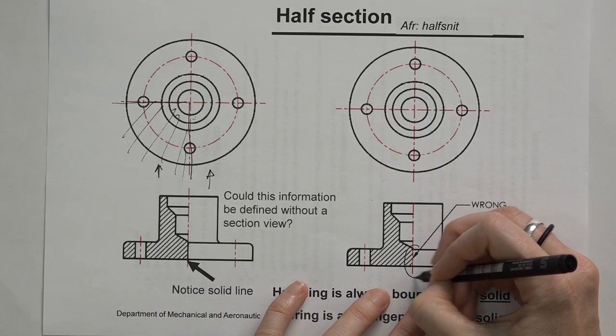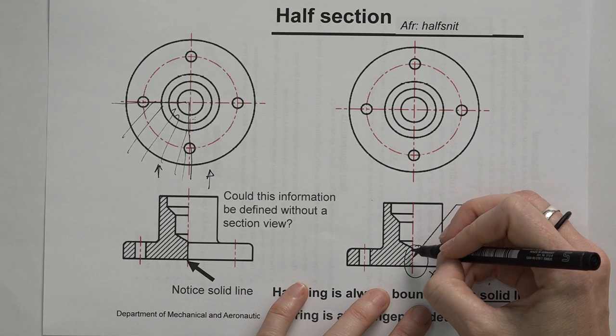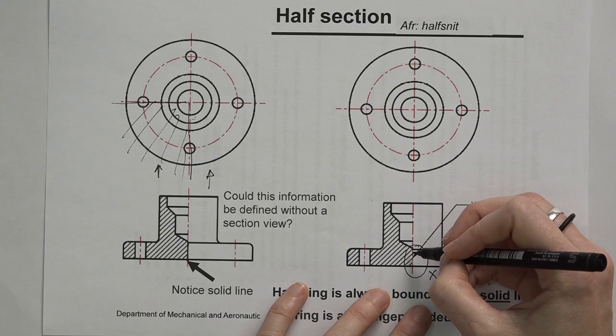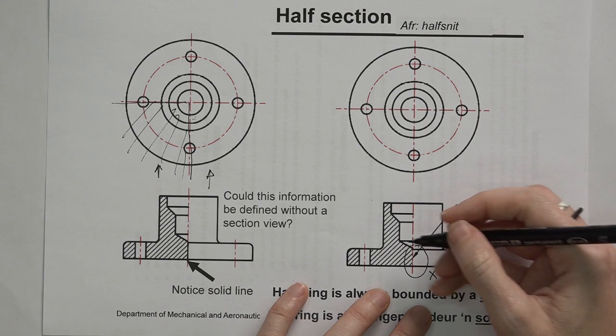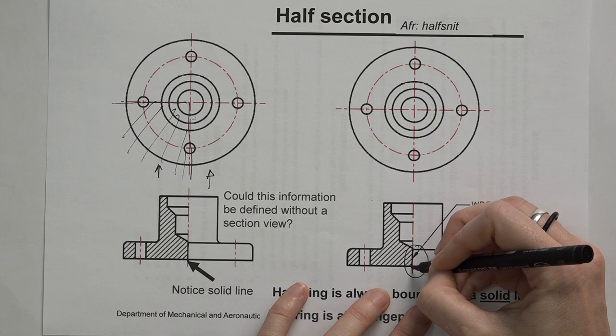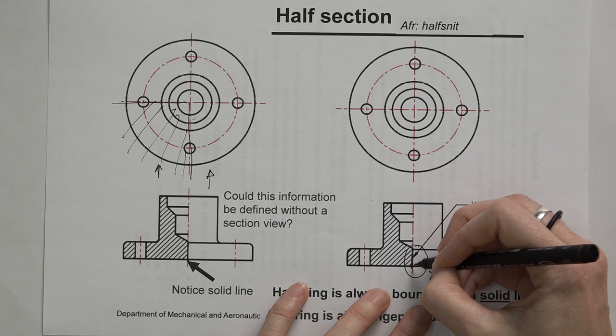So here in this case, this would be incorrect. If I had a place where I'm actually cutting through solid material, and I indicated by using a center line, that will be incorrect. You need to show that as a solid line.